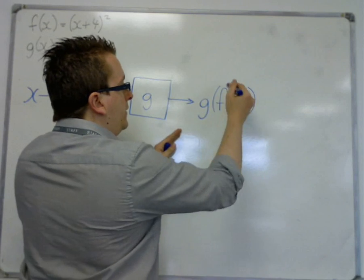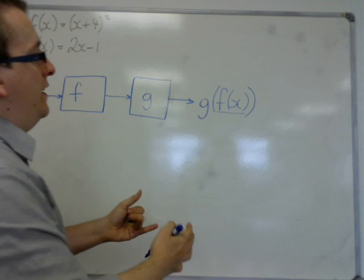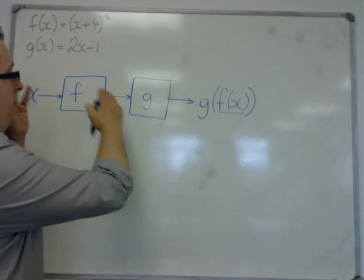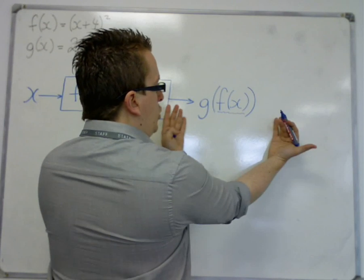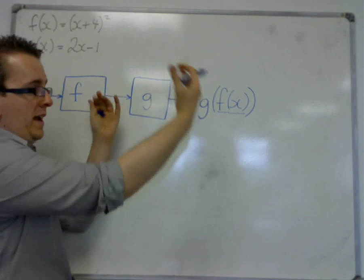So f of x went into g of x, and effectively we now have gf of x. This is saying f was applied first and then g was applied, so it's like working your way outwards.